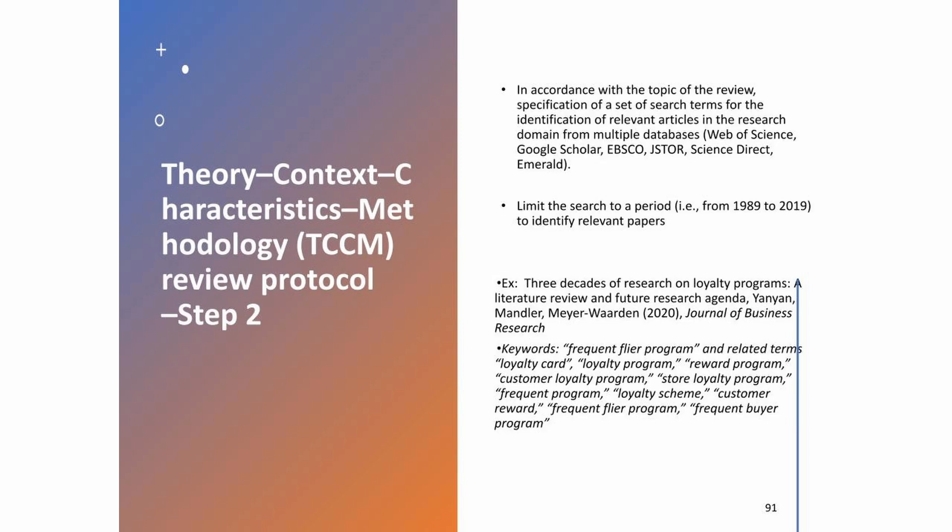The second step, in accordance with the topic of the review, is the specification of a set of search terms for the identification of relevant articles in the research domain. This has to be done from multiple databases — for example, Web of Science, Google Scholar, EBSCO, JSTOR, Science Direct, and Emerald. In this step, you also have to limit the search to a period, for example over the last 30 years, which is a very long period, or shorter periods.